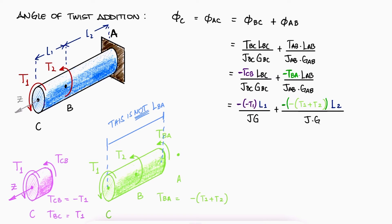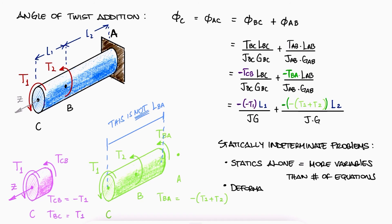All of these concepts are essential for finding angles of twist, and therefore, they are essential for solving statically indeterminate problems. Just like with axial loading, statically indeterminate torsion problems are those where unknown torques, and therefore torsional shearing stresses cannot be found from static analyses alone.